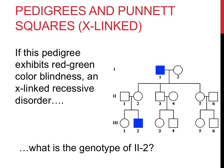The second part of this problem asks: what is the genotype of Roman numeral 2-2? After identifying the individual — a female — we use the rest of the pedigree to determine her genotype. She doesn't have the disorder, eliminating the possibility of being homozygous recessive. The remaining question is whether she's heterozygous or homozygous dominant. Since her father had the trait and her son has the trait, she must have received and be able to pass on the recessive allele. Her genotype must be X capital B, X lowercase b — she is a carrier for this trait.